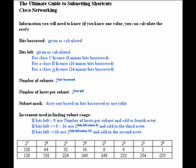For a Class A license, which is in the format network, host, host, host, you will have the last three octets to play with, so the bits left are 24 minus the bits borrowed.